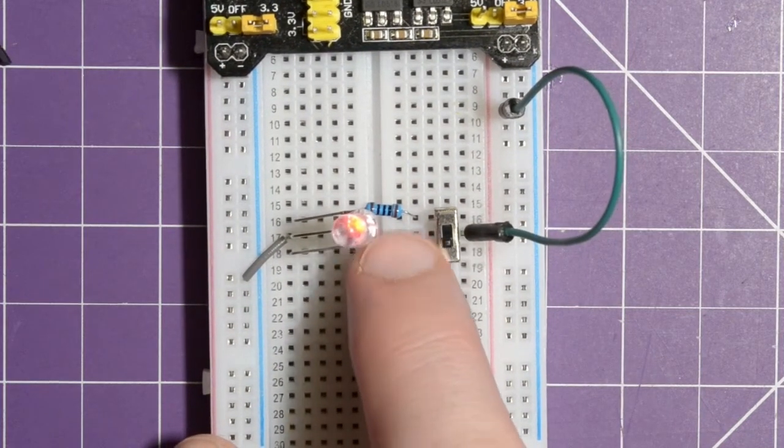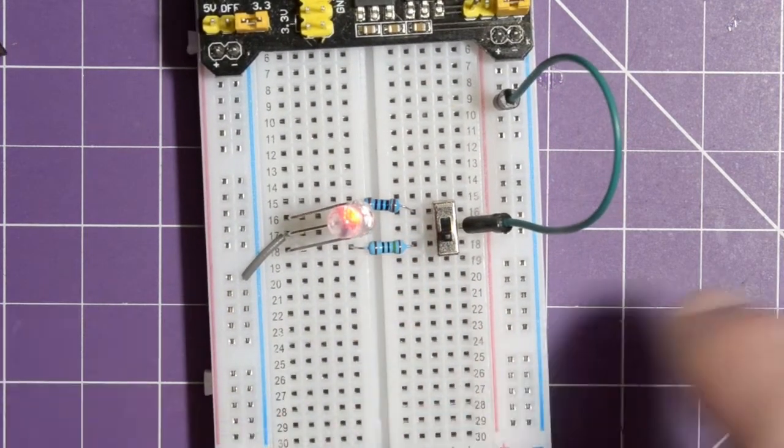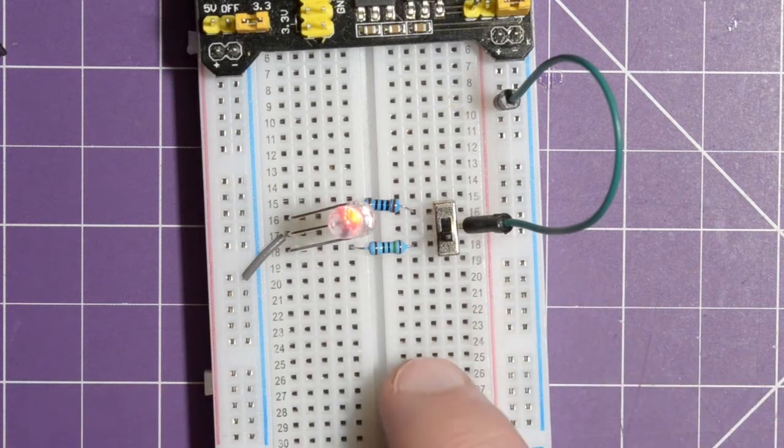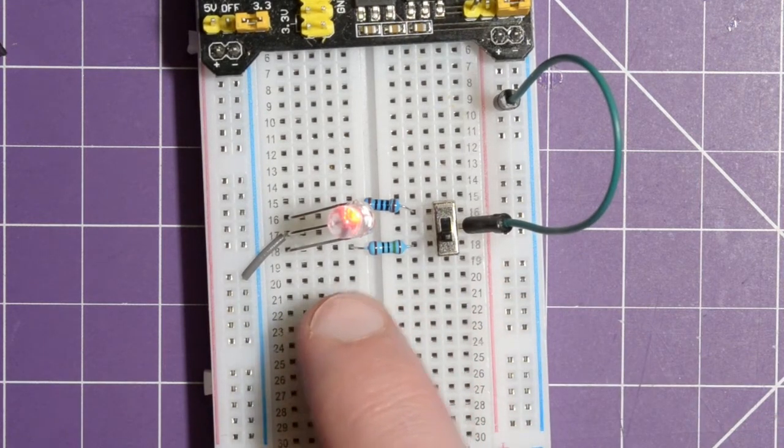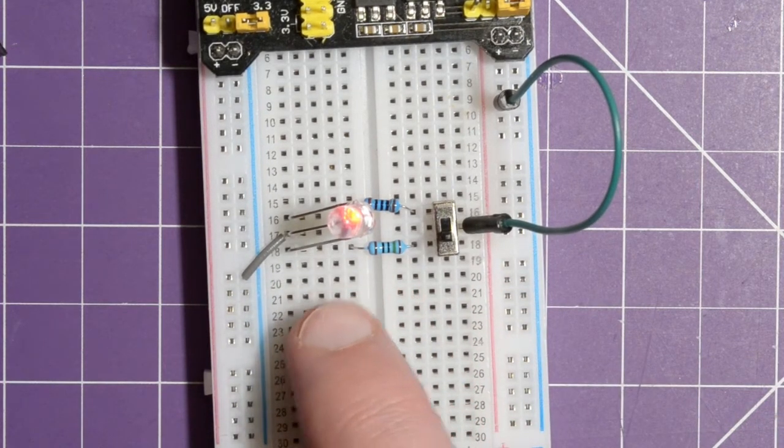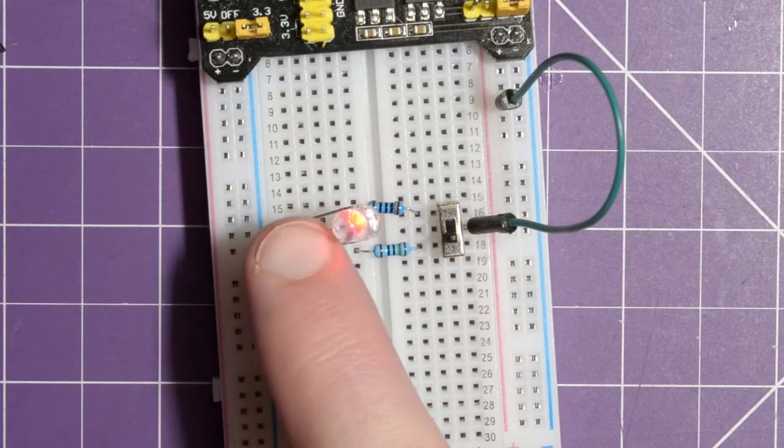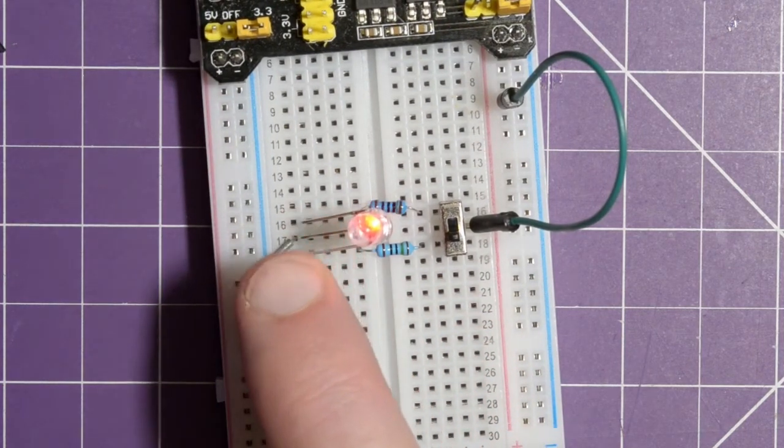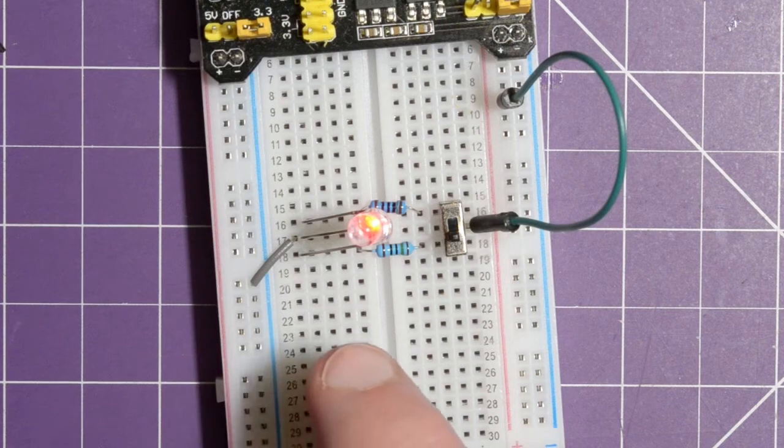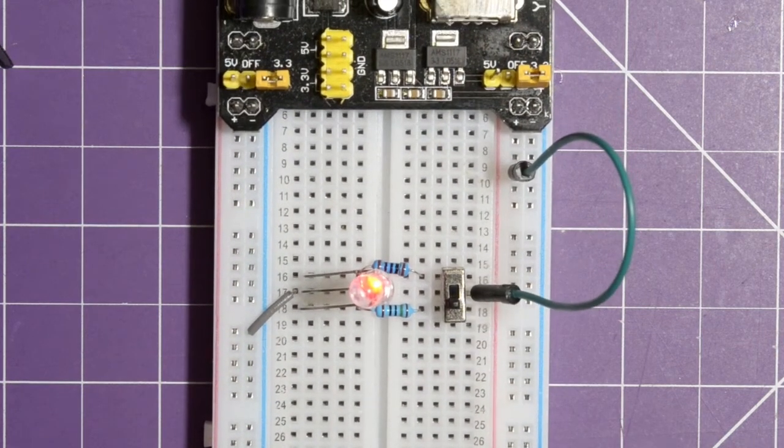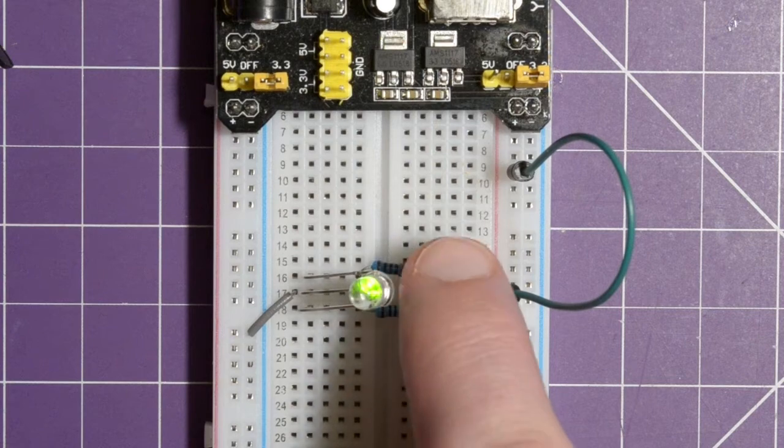Usually you can pick up these resistor values from, you know, those LED strips. You can see the SMD resistors that are on there. The red will have a slightly higher resistance because the red has a lower forward voltage, so it's usually brighter for the same amount of voltage.